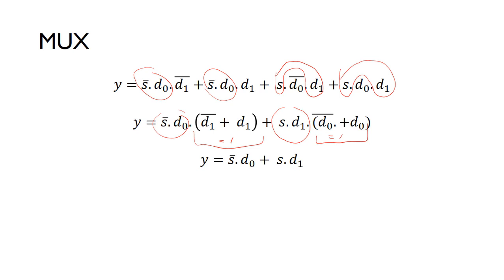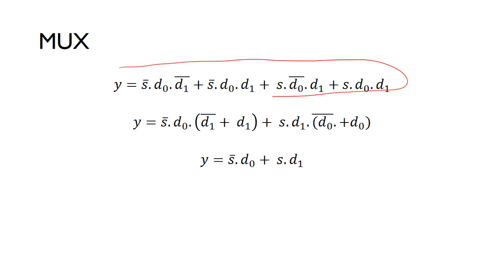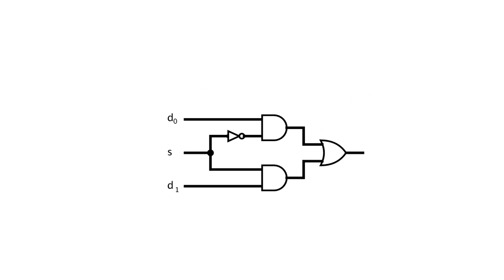By doing a bit of Boolean algebra, we can reduce this complicated top expression to a much simpler expression. Now we can go ahead and build that, and this gives us the circuit for a multiplexer.